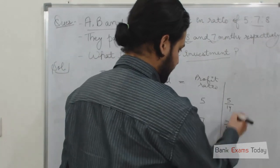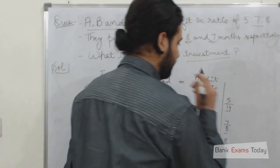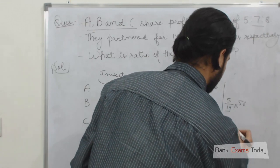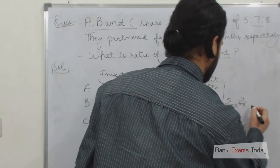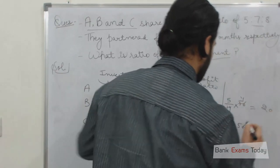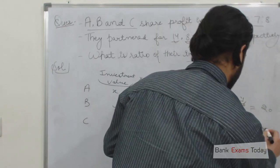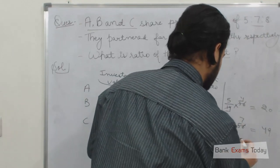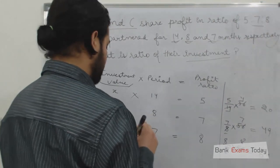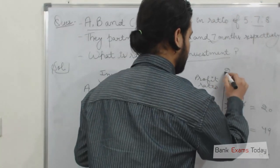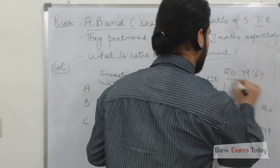Taking the LCM of 14, 8 and 7, the ratio of investment comes out to be 20, 49 and 65. And that's our answer.